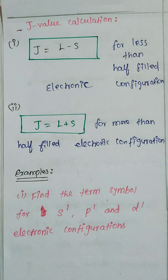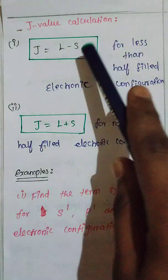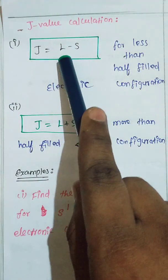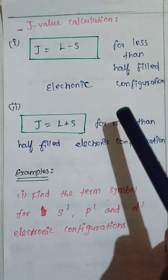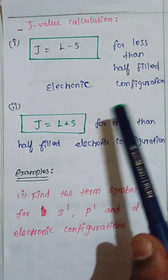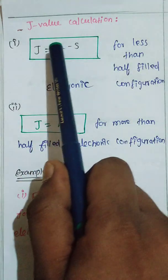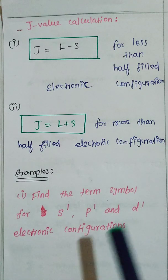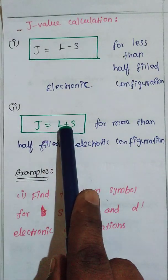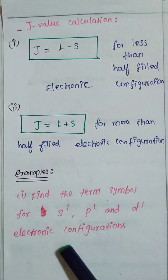For term symbols we need to calculate spin and L values, and then calculate the J value. For J value calculation: if the given configuration is less than half-filled, we use the formula J equals L minus S. If the given configuration is more than half-filled, we use the formula J equals L plus S.